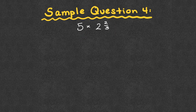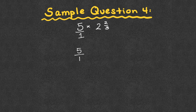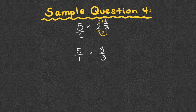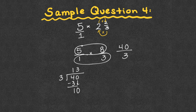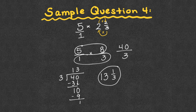Question four: five times two and two-thirds. Every time we have a whole number, we put it over one. Then convert two and two-thirds: three times two is six, plus two is eight — eight-thirds. Looking diagonally, five and three share only a factor of one; one and eight share only one. So five times eight is 40 over one times three is three — forty-thirds. Doing long division: 40 divided by three is 13 remainder 1. Final answer: thirteen and one-third.